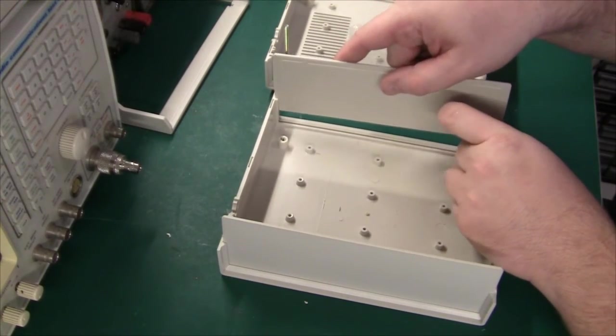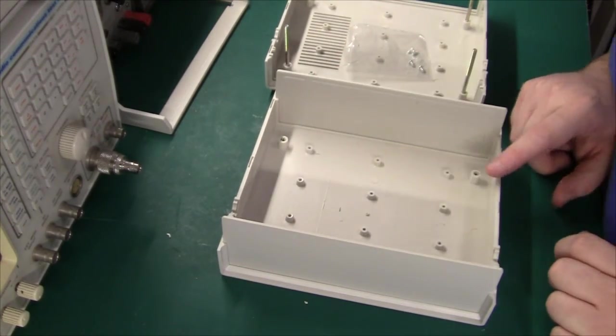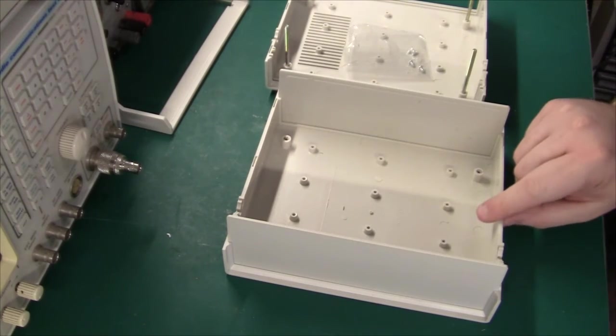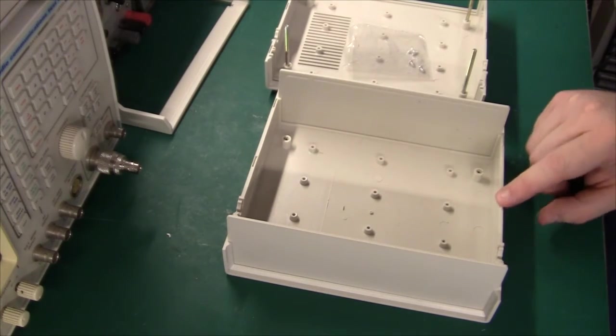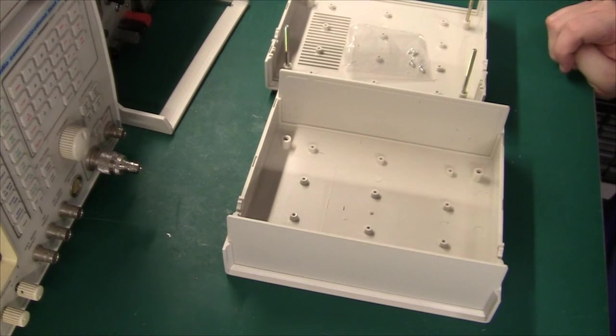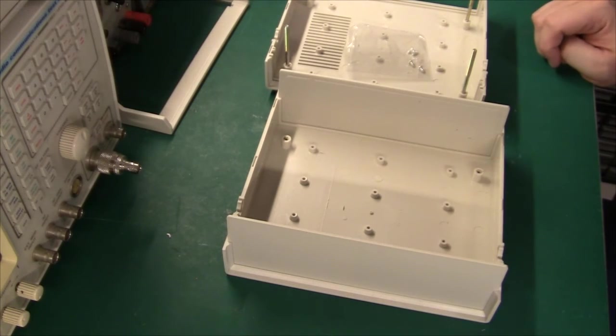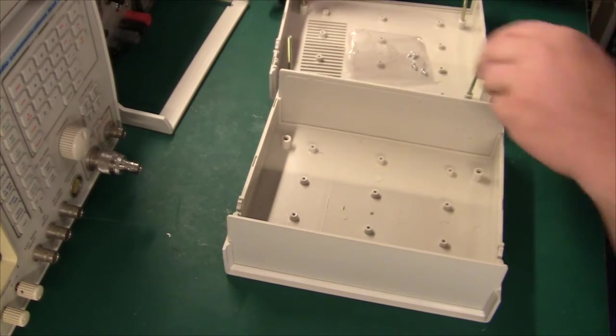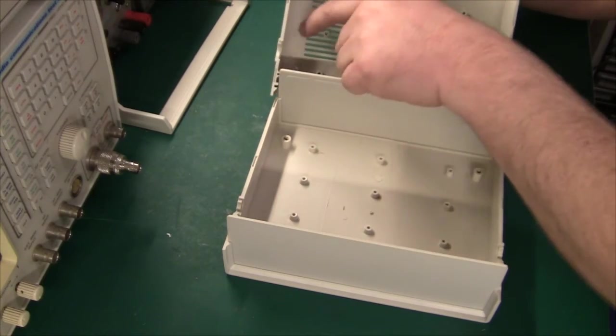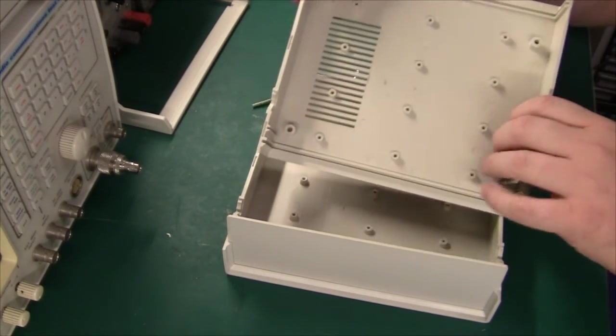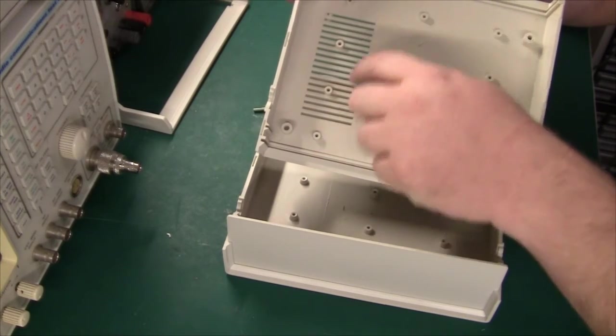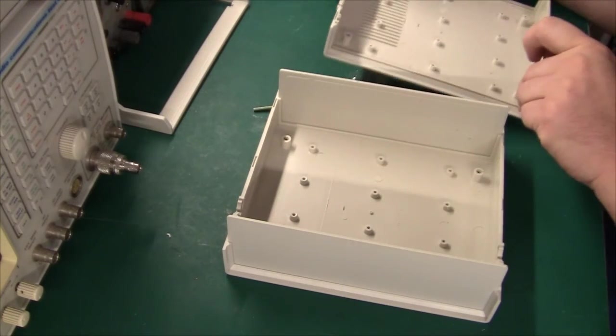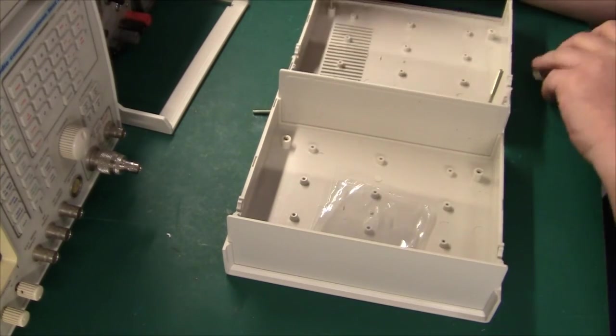So yeah, I cannot recommend this box if you want to sell it because the plastic is just too cheap and it looks cheap. Which of course it is. But if you do some instrumentation at home or for your ham radio club or something like that, it's a really decent box. And as you can see there are even some grills here. Yeah, can you see that? There are some grills here at the bottom piece for air ventilation. So if the plastic had been a little bit better, I think this would be a very highly recommended enclosure.